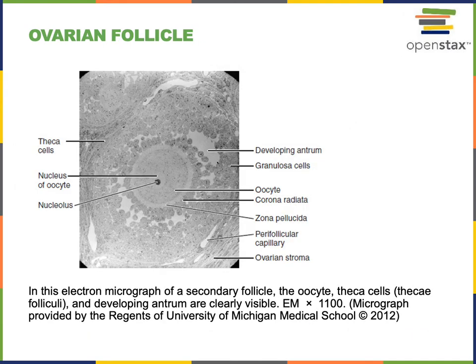Here we see an electron micrograph of an ovarian follicle in the cortex of the ovary. This follicle is a secondary follicle — a follicle that has been stimulated by follicle-stimulating hormone to start growing. As it grows, it starts to produce liquid that fills a space called an antrum. So a secondary follicle is a follicle that's starting to grow and develop an antrum.